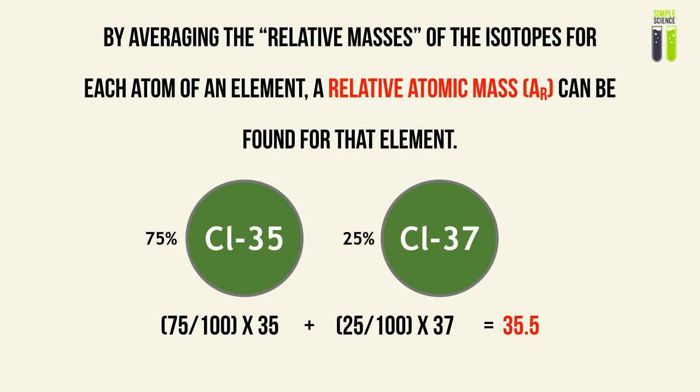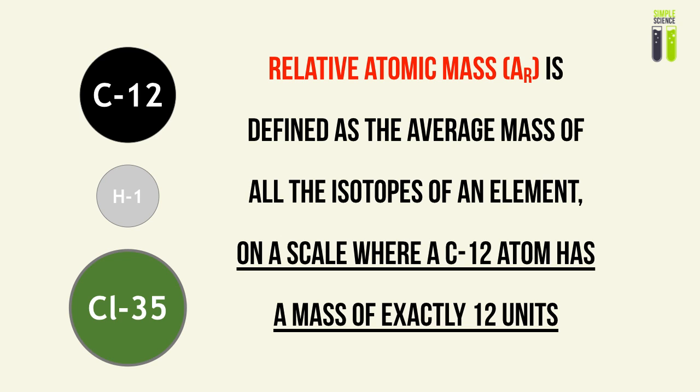We do this by multiplying the relative abundance by the relative atomic mass of each chlorine isotope. The sum of that gives us 35.5 — that's our average relative atomic mass that we put on the periodic table and use in stoichiometry. This gives us the relative atomic mass, Ar, defined as the average mass of all the isotopes of an element on a scale where a carbon-12 atom has a mass of exactly 12 units.